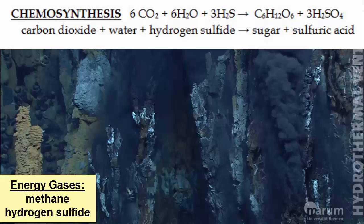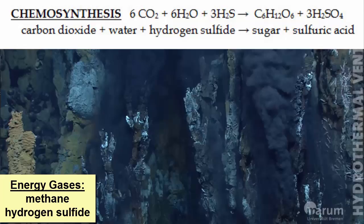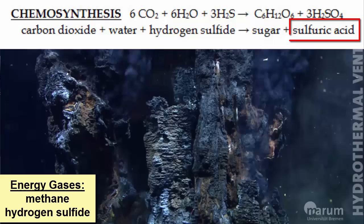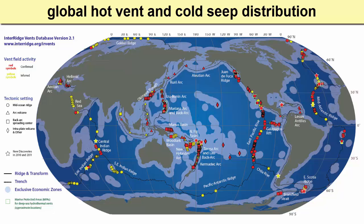This equation shows one example of chemosynthesis that happens at hot vents atop seafloor spreading centers, otherwise known as hydrothermal vents. Notice that in this equation, sulfuric acid is the waste product. As this map shows, there are a number of different vent or seep communities that have been identified and studied across the world's oceans. They can be separated into two major types: hot vents and cold seeps.